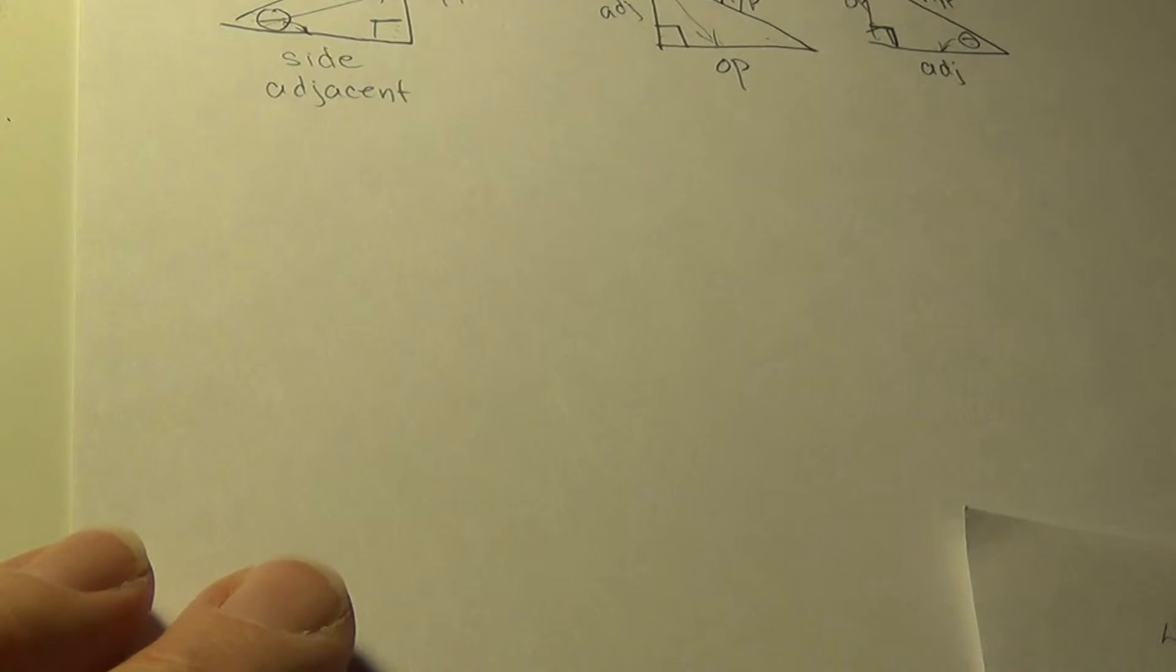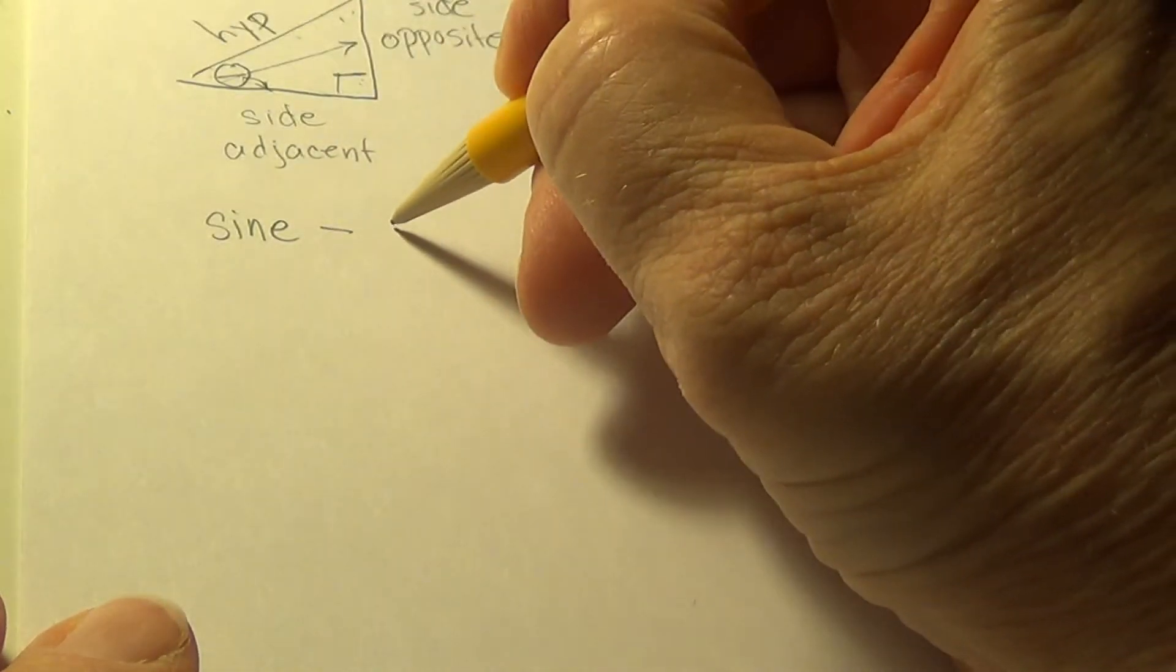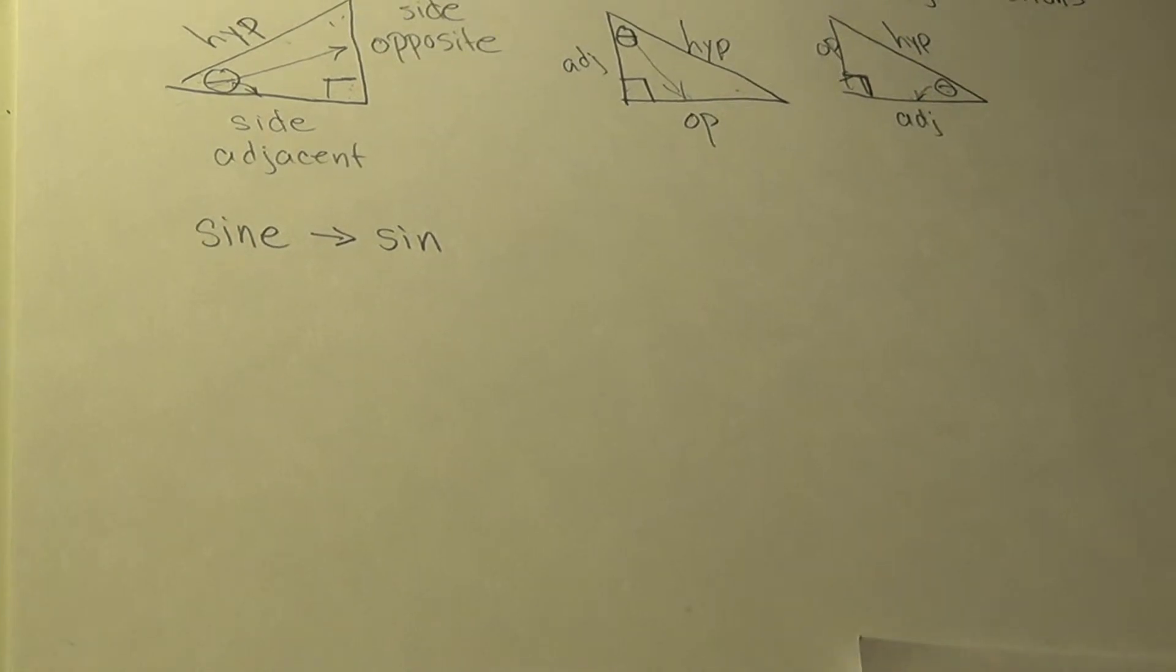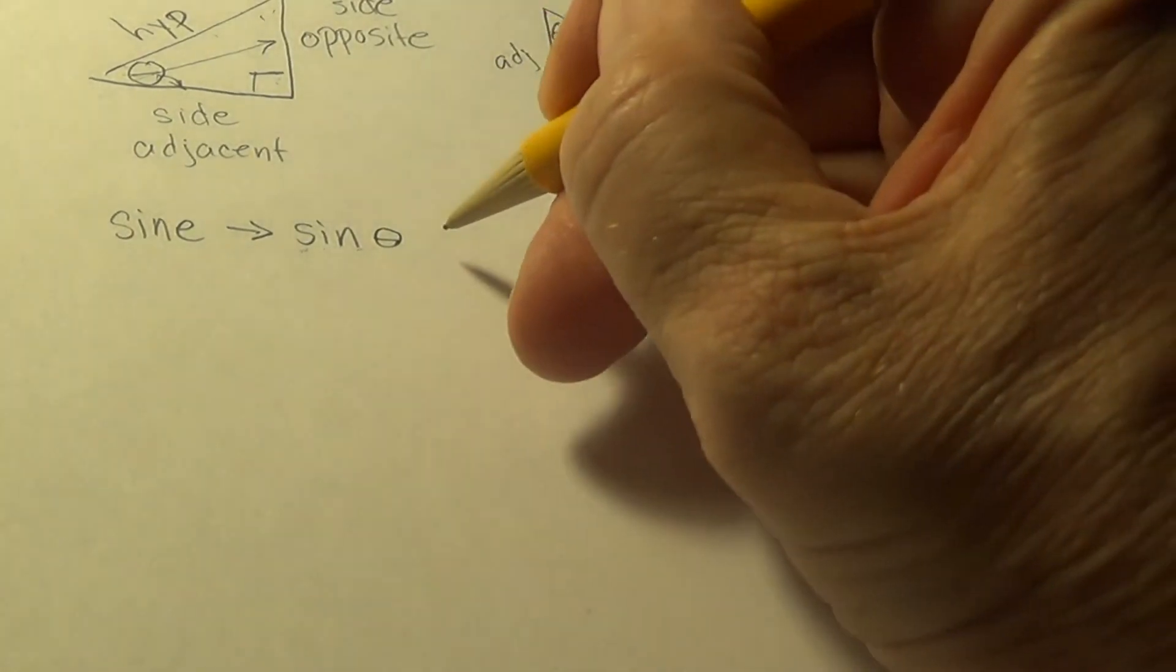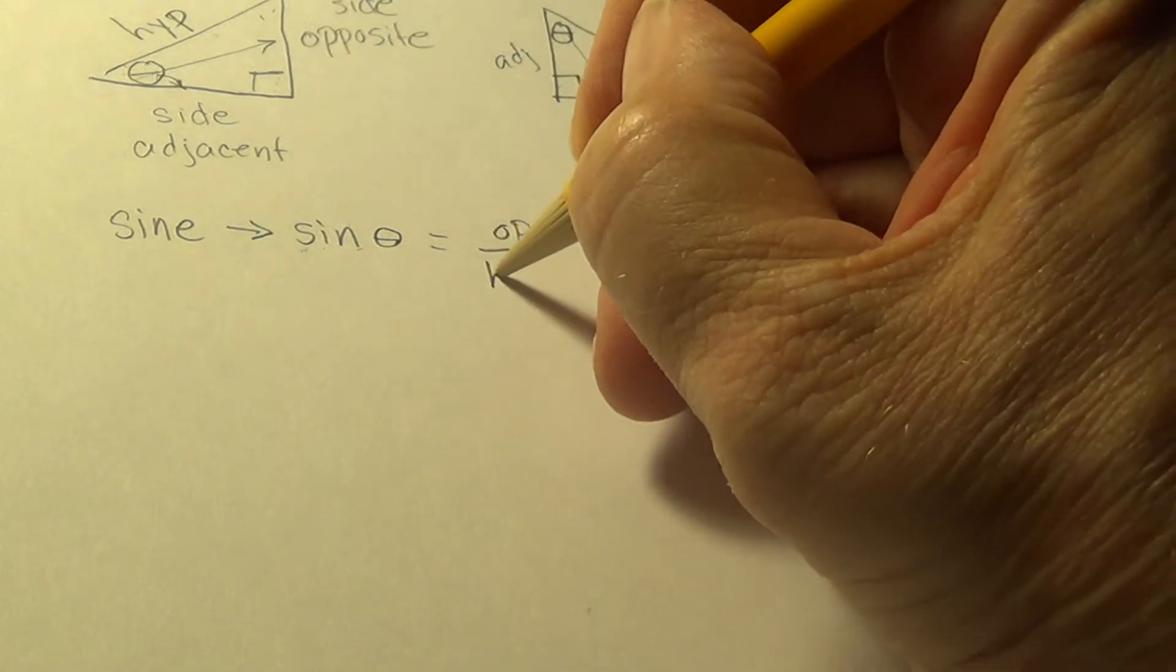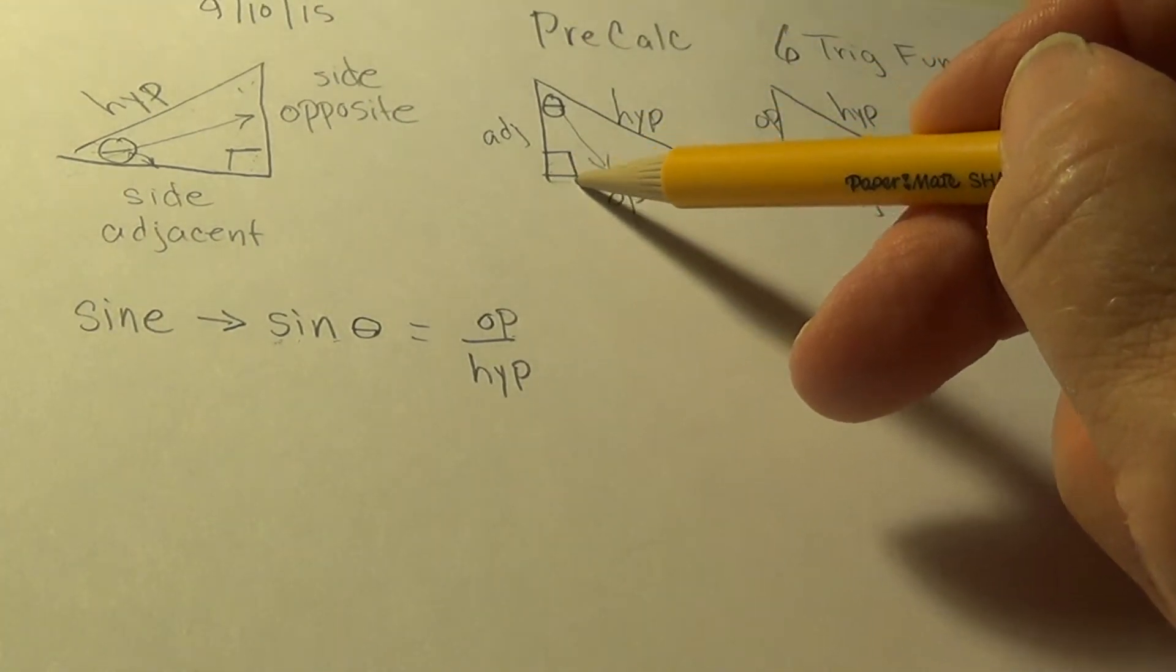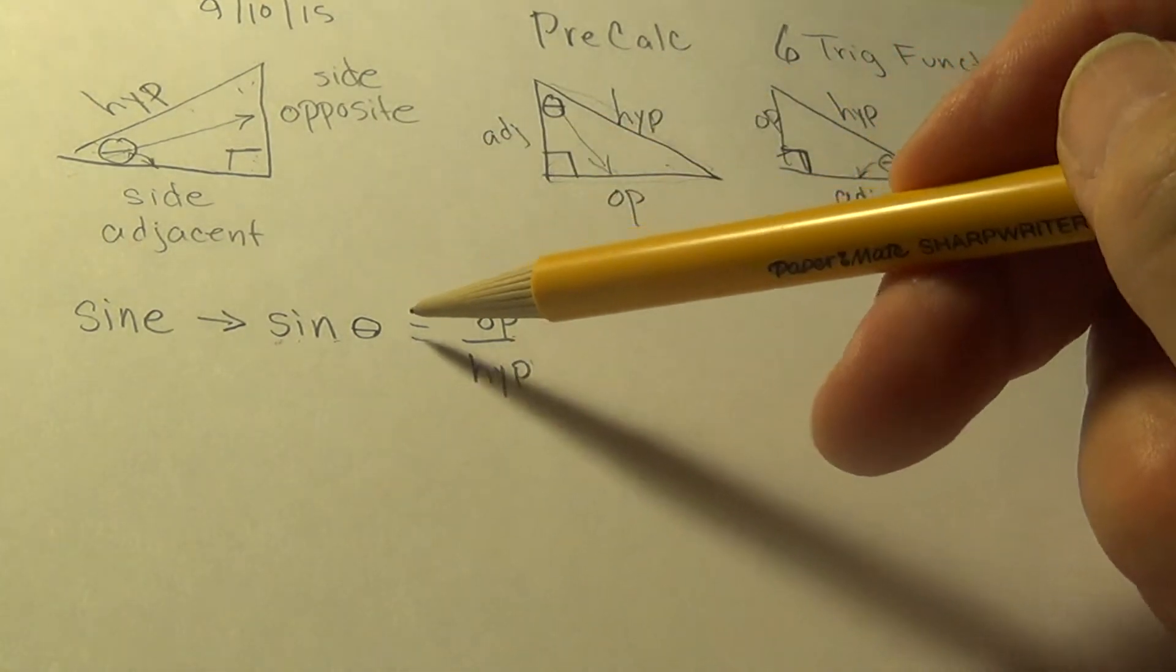Now that we have the names of the sides of the right triangle down, we will define the trig functions. The first one is pronounced sine. Its abbreviation is S-I-N, but it is pronounced sine, not sin. There's no sin in our class. Well, I'm sure there is, but I'm not teaching it. The symbol or abbreviation S-I-N is still pronounced sine, and sine of an angle, sine of theta, equals opposite side divided by the hypotenuse. If you knew the length of the side opposite and the length of the hypotenuse and you divided them, you would have the sine of that angle.